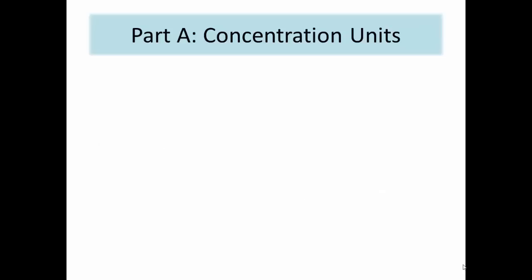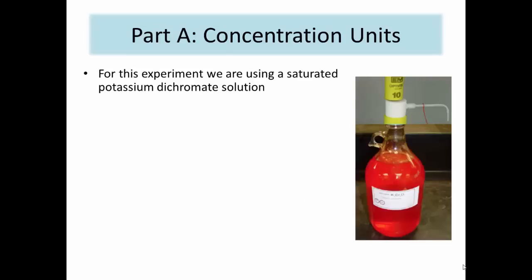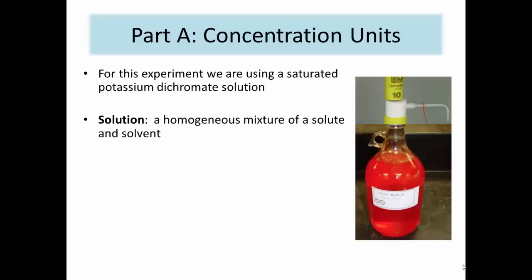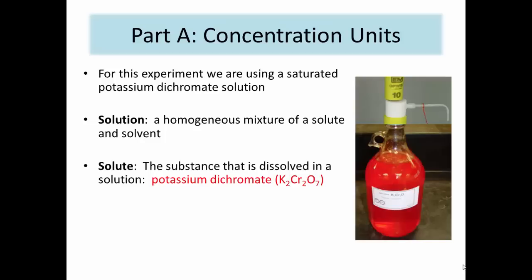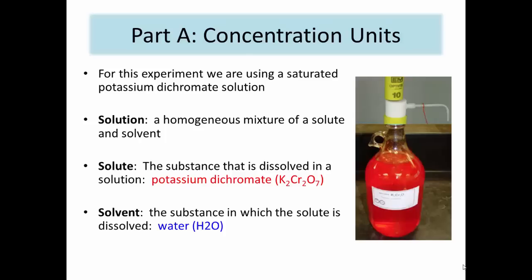In Part A of the experiment you will find the concentration of a saturated potassium dichromate solution. A solution is a homogeneous mixture consisting of a solute and a solvent. The solute is the substance that is dissolved in the solution — in this experiment, the solute is potassium dichromate. The solvent is the substance, usually a liquid, in which the solute is dissolved — in this experiment, the solvent is water. When a solvent can no longer dissolve additional solute, the solution is said to be saturated.